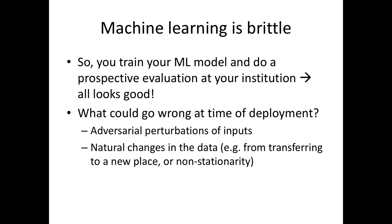You do chart review to make sure what you're predicting is actually what you think you're predicting. You even do prospective deployment, letting your machine learning algorithm drive some clinical decision support, and things are working great. But what happens after this stage? What happens when your model is used not just tomorrow, but next week, the following week, the next year? What if your model, working well at one hospital, then another institution — say Brigham Women's Hospital, UCSF, or some rural hospital — wants to use the same model? Will it keep working? That's the question for today's lecture.